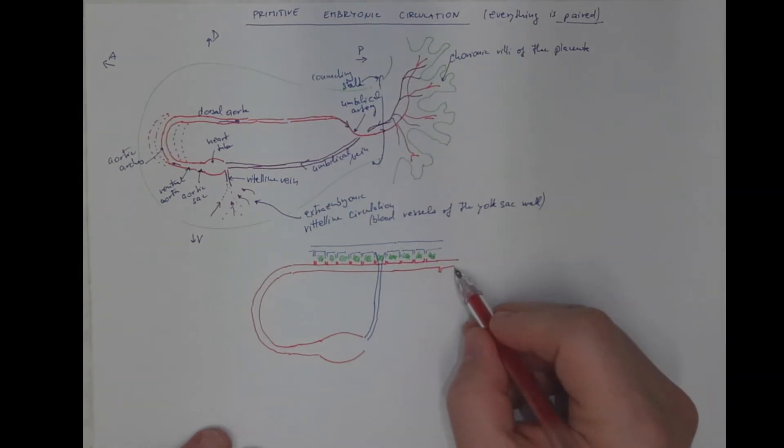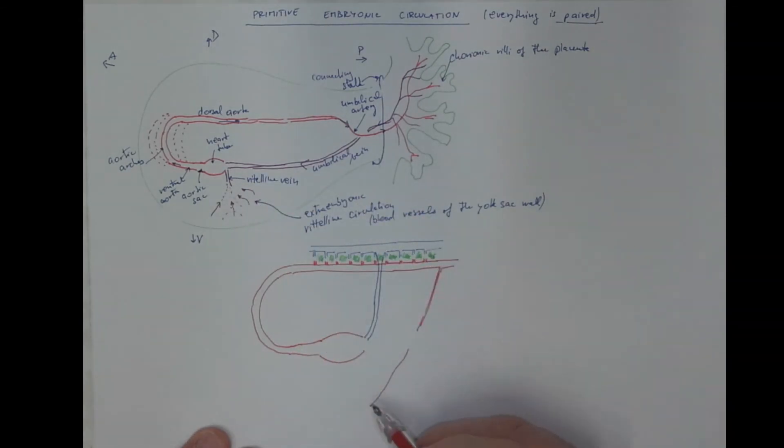If we follow the aorta, there is another branch or two that will provide a blood supply to this vitelline circulation. So this artery is called the vitelline artery. And we know that the blood is collected here back to form the vitelline vein that is another tributary to the heart.